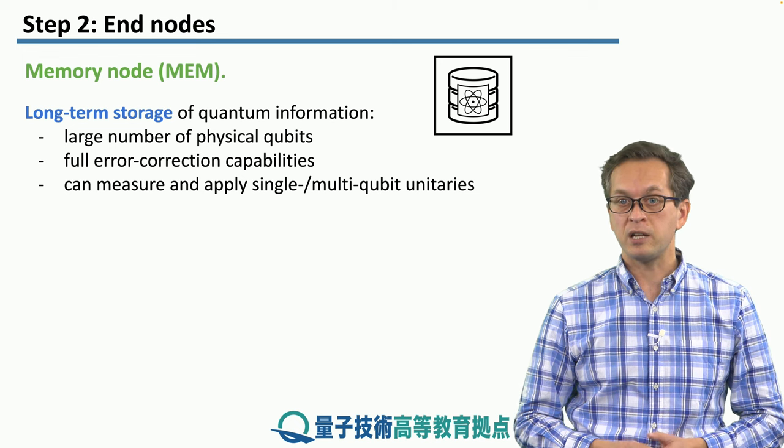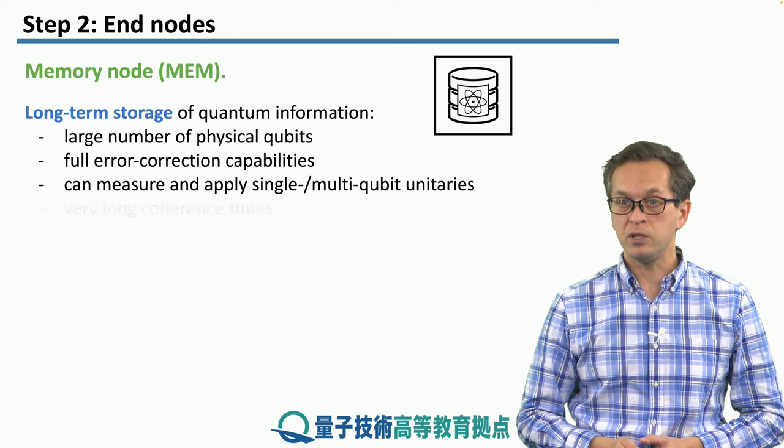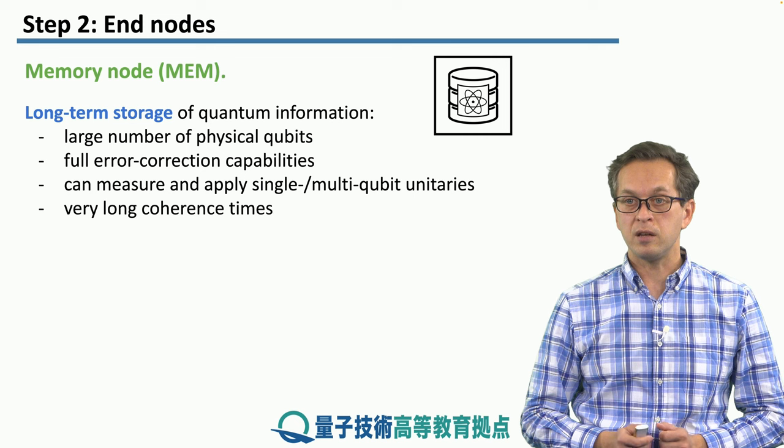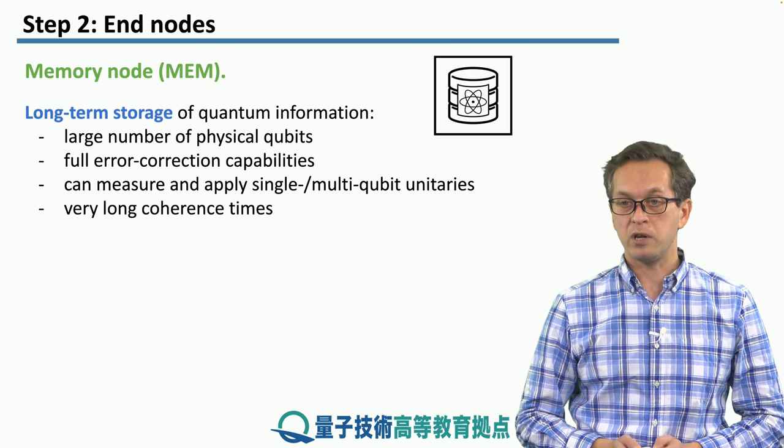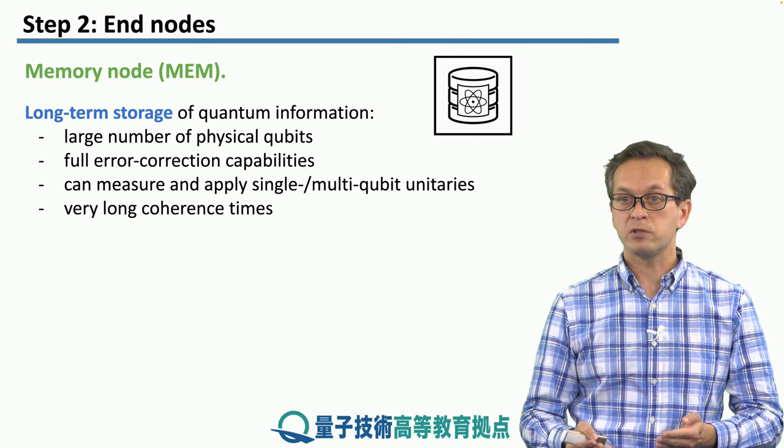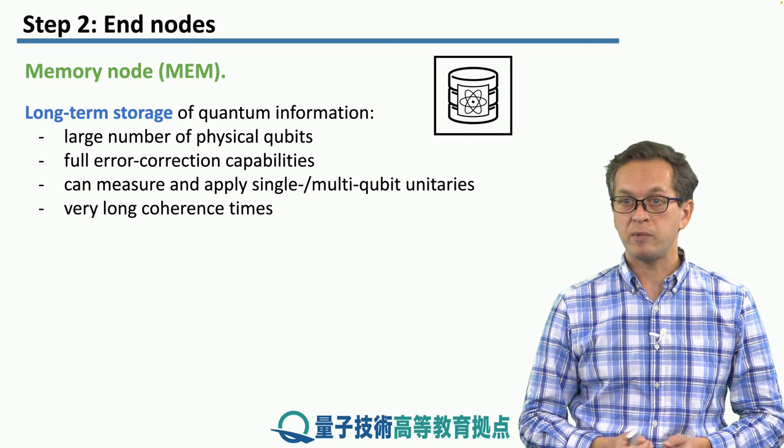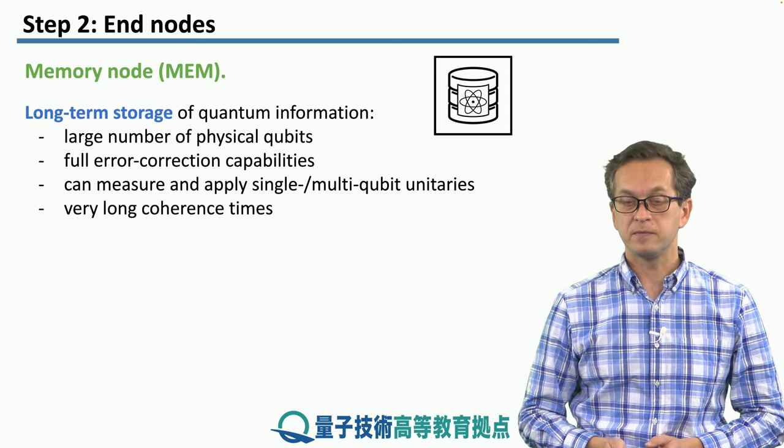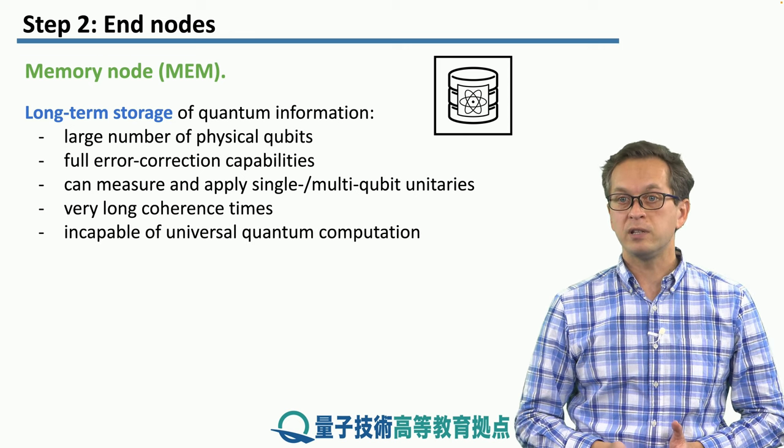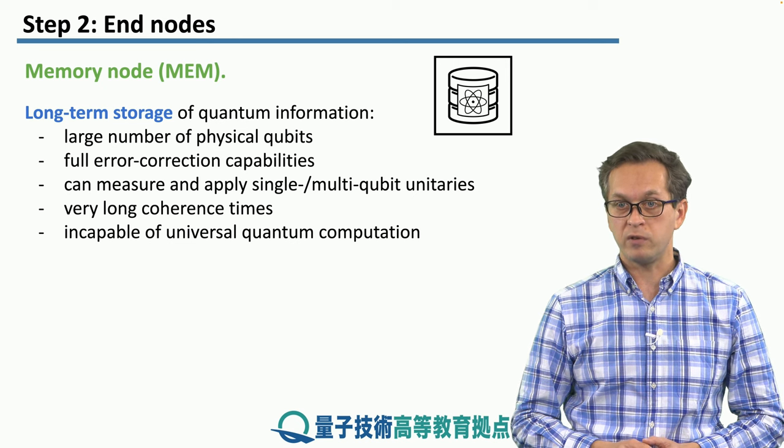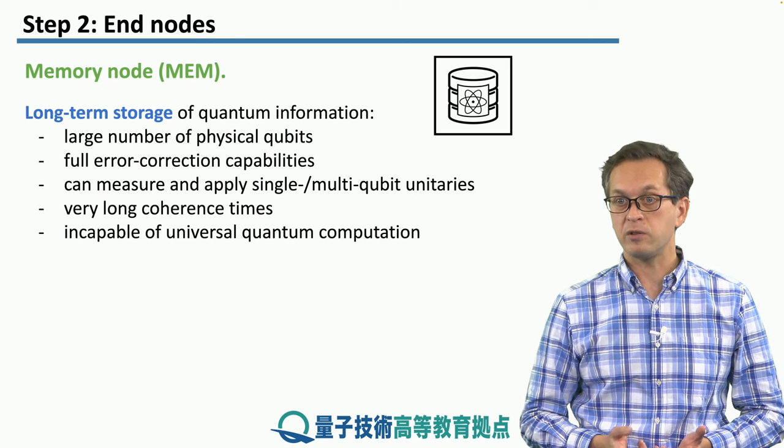These nodes can measure and apply single or multi-qubit unitaries. And their main job is to keep very long coherence times. We want to store the quantum information for a long time, and retrieve it with high fidelity. But it's not really designed or capable of universal quantum computation, because that's not its job.